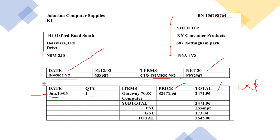You have the subtotal, and PST is exempt so you don't have it. GST is added, which is $173. When you add it up, you get the total of $2,645. That is the total of your invoice.